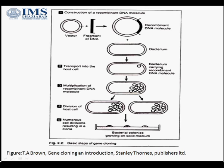Once we have sufficient number of colonies, the next step is the selection of recombinant colonies from the transformed ones. There may be some cells which are transformed — meaning they have the plasmid — but the plasmid doesn't carry the fragment of interest. Those colonies have to be selected from the non-transformed colonies. These are the basic steps showing how we construct a recombinant DNA molecule, how it multiplies in the host, and how colonies are selected.